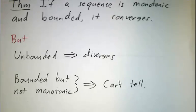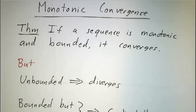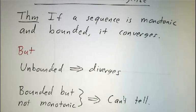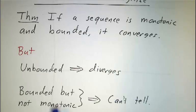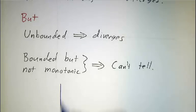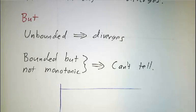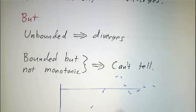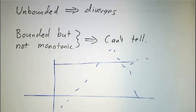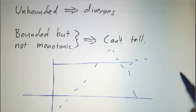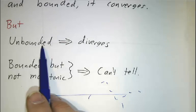Here's the big theorem about monotonic sequences: if a sequence is monotonic and bounded, it automatically converges. But a warning: if a sequence is not bounded, it always diverges. And if it's bounded but not monotonic, sometimes it converges, sometimes it diverges. If it's unbounded, eventually it'll get either bigger than a gigantic number or smaller than a really negative number, so it can't settle down — it automatically diverges.